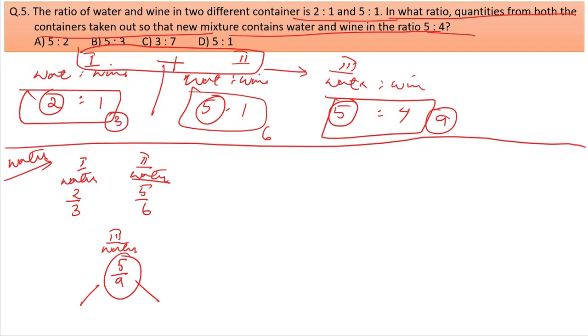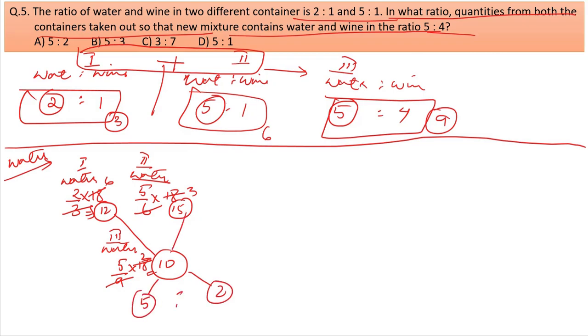Taking LCM of 3, 6, and 9, which is 18. Multiply: 2/3 becomes 12/18, 5/6 becomes 15/18, and 5/9 becomes 10/18. Now, 12 minus 10 equals 2, and 15 minus 10 equals 5. So the ratio is 5 to 2.